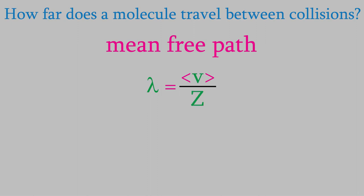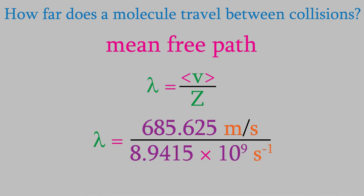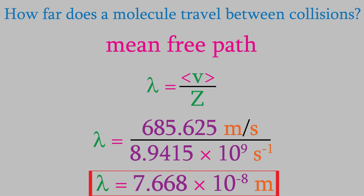For example, if we look at the sample of water that we discussed just a moment ago, we have 685.625 meters per second for the average velocity, and 8.9415 times 10 to the 9 seconds to the minus 1 for a collision frequency. Plugging these into our equation for the mean-free path gives us lambda equals 7.668 times 10 to the minus 8 meters. In other words, each water molecule can travel an average of 76.68 nanometers between collisions.